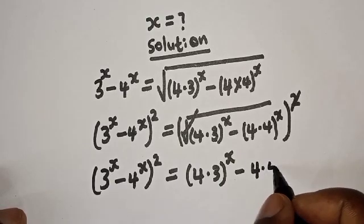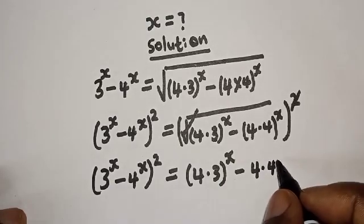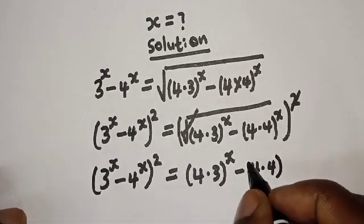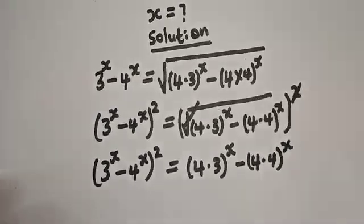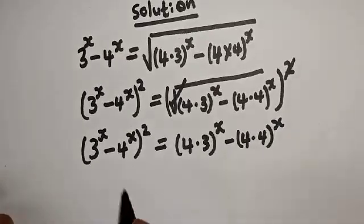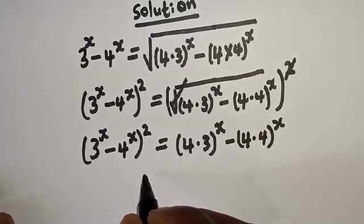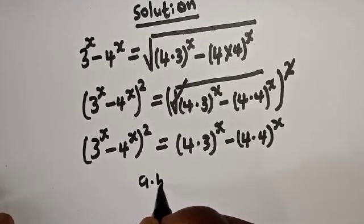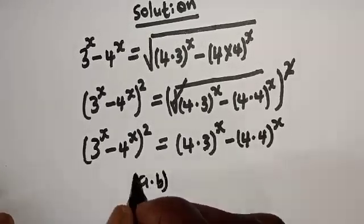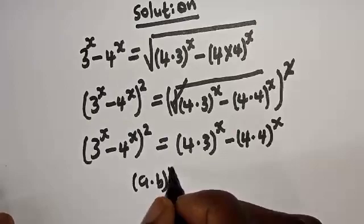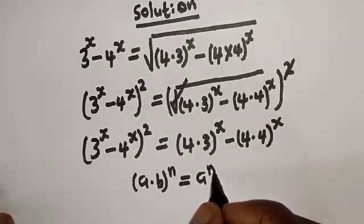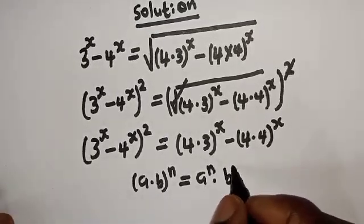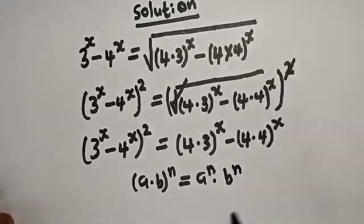Minus 4 multiplied by 4 raised to power s. Take note of this rule: if you have a multiplied by b to the power of n, this is equal to a raised to power n multiplied by b raised to power n.